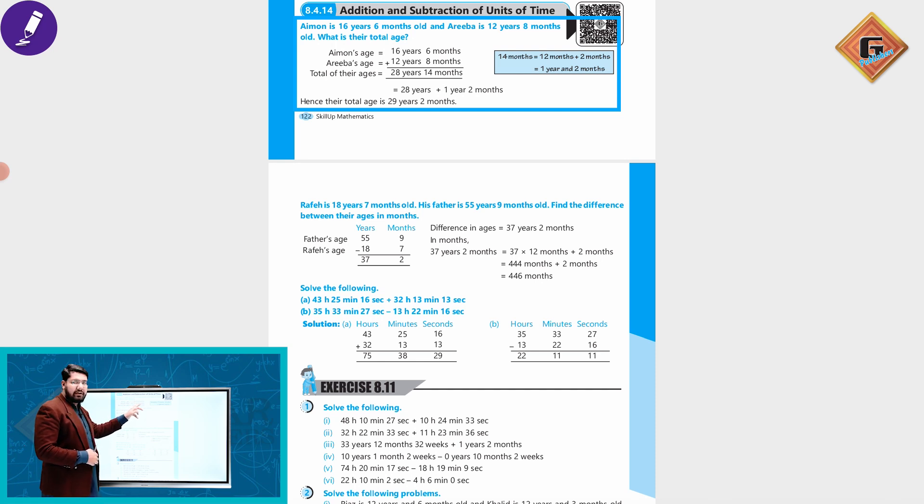So I have 6 months to add to 12 years or 8 months, so 6 months plus 8 months equals 14 months. 14 months is 12 months plus 2 months. 12 months means one year and 2 months, so this is 1 year and 2 months. 16 years plus 12 years equals 28 years, plus 1 year equals 29 years and 2 months.